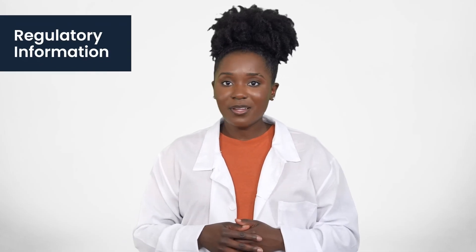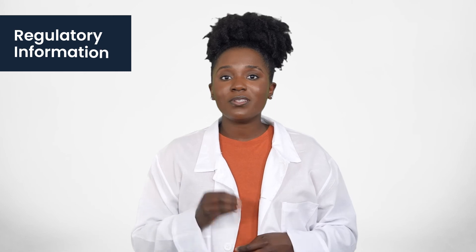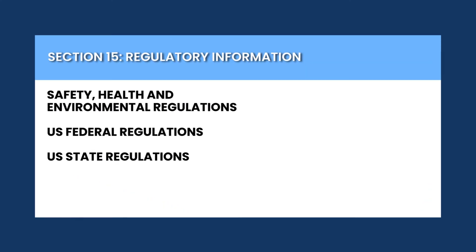Section 15 of the SDS provides information on regulations and legal information related to the product. It covers details about any safety, health, and environmental regulations that apply, as well as any specific requirements for transportation, storage, or disposal. This includes compliance with various federal regulations such as the Clean Water Act, state-specific regulations like California's Proposition 65, and any relevant international regulations.